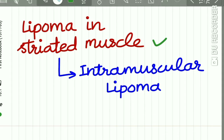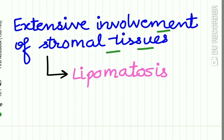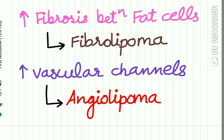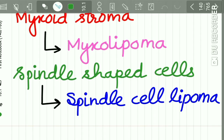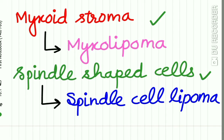When lipoma extends into striated muscle, it is called intramuscular lipoma. Extensive involvement of stromal tissues is called lipomatosis. Increased fibrosis between the fat cells is called fibrolipoma. Increased vascularity is angiolipoma. If you find myxoid stroma, it is called myxolipoma.